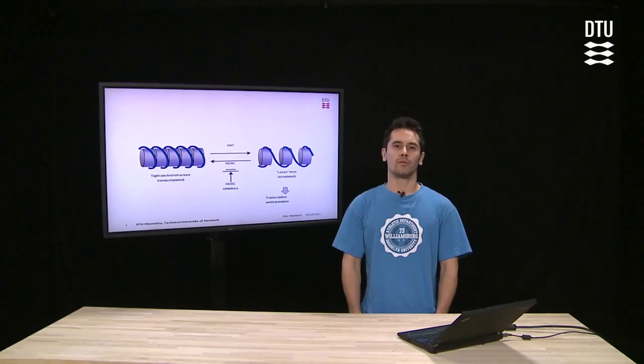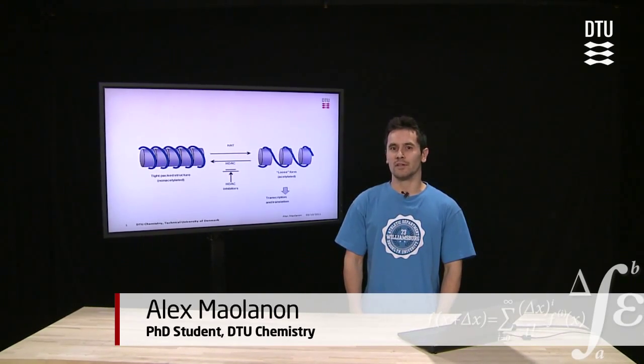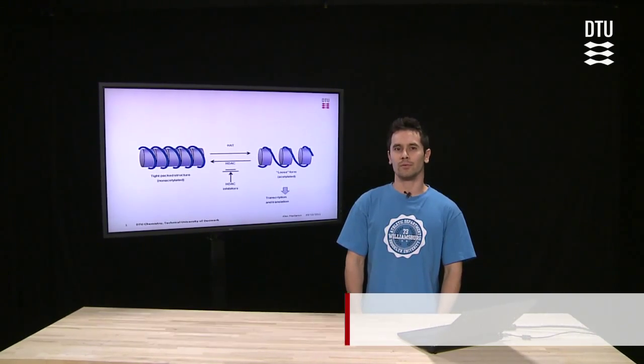The chromatin is a structure composed of DNA and histone proteins. How tightly packed this structure is depends on the acetylation of the histones.